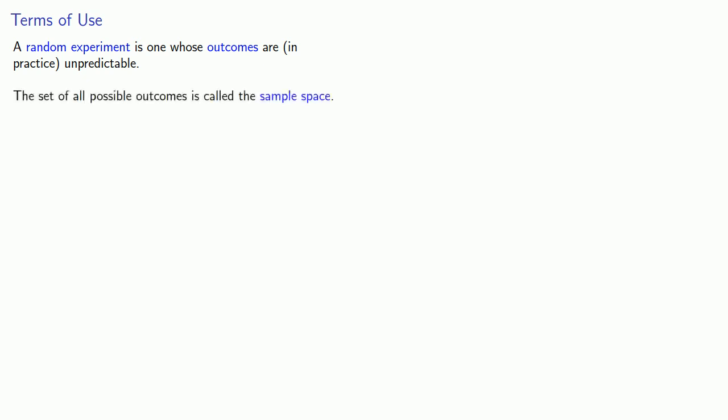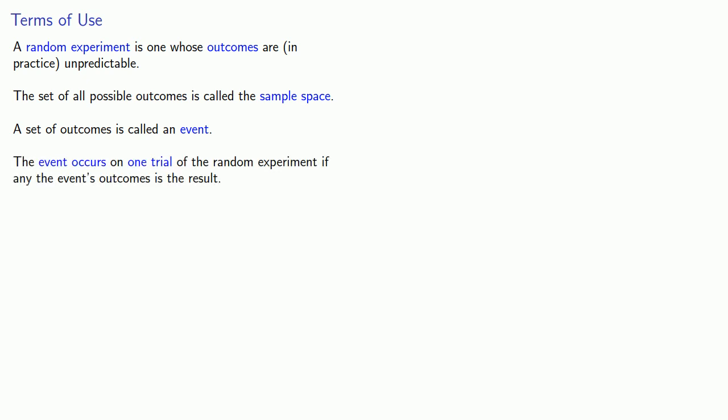What that means is we don't know what's going to happen when we run the experiment on any particular instance. However, we might have some idea of what the outcomes could be, and so this set of all possible outcomes is known as the sample space. Now if we take some of those outcomes, a set of outcomes is called an event, and we say that the event occurs on one trial of the random experiment if any of the event's outcomes is the result.